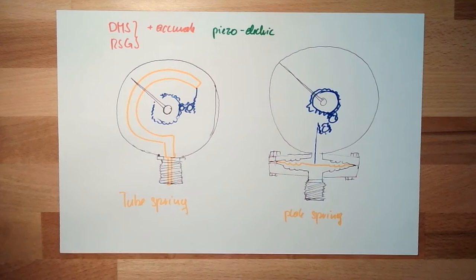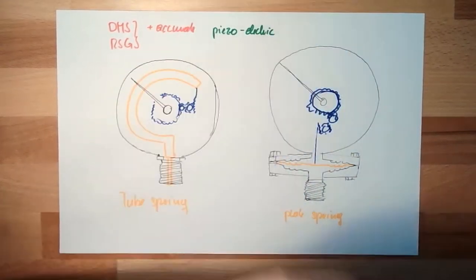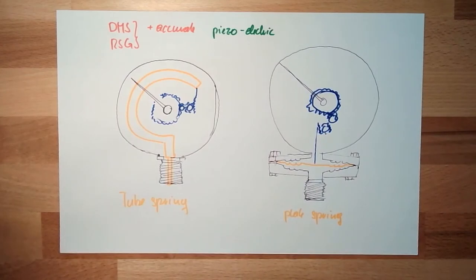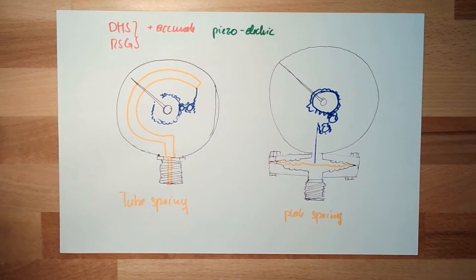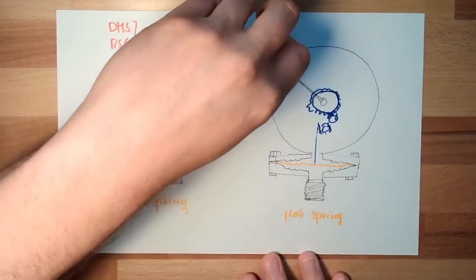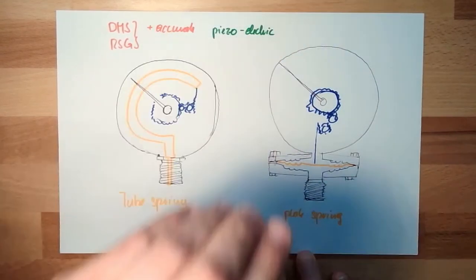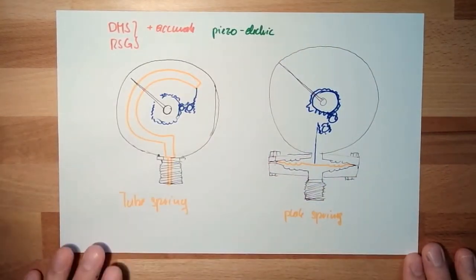Disadvantages of piezoelectric devices: they tend to drift. So if you have static pressure, piezoelectric sensors are not that accurate, because they tend to drift a little bit. For dynamic pressure they are perfect; for static pressure they are not that perfect. Also, you need special cables and special charge amplifiers — there is more required around this piezoelectric measurement.